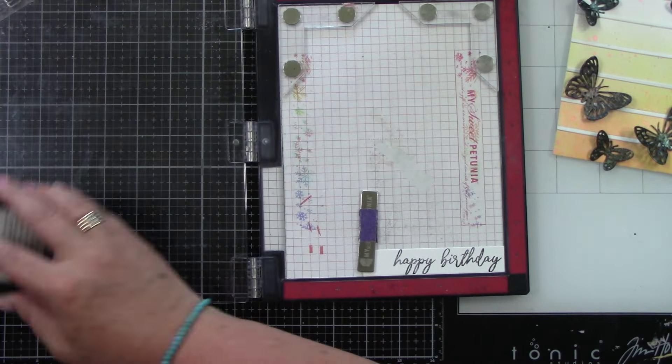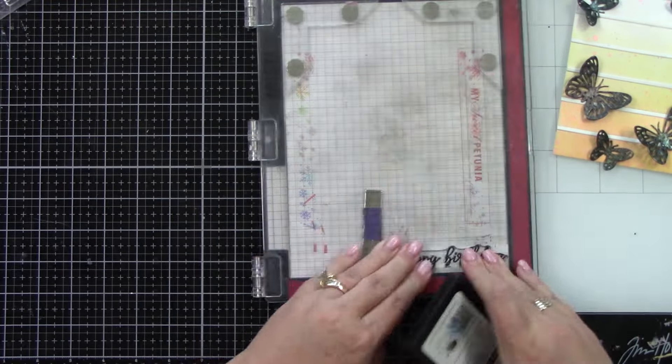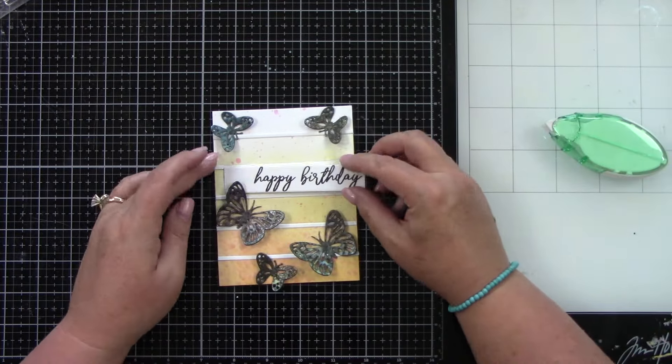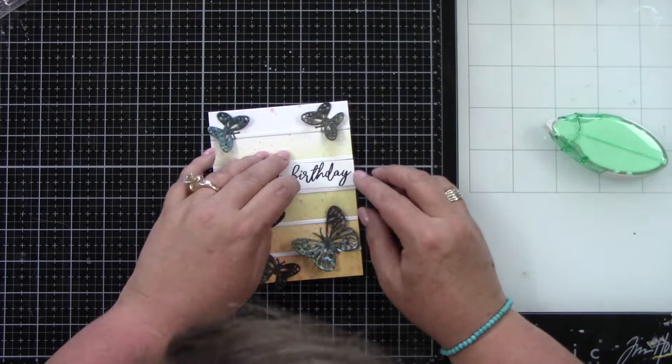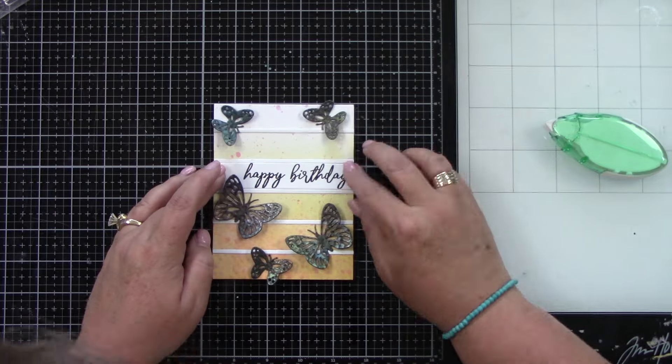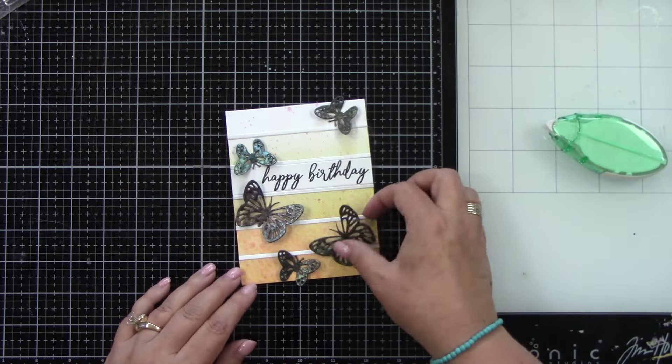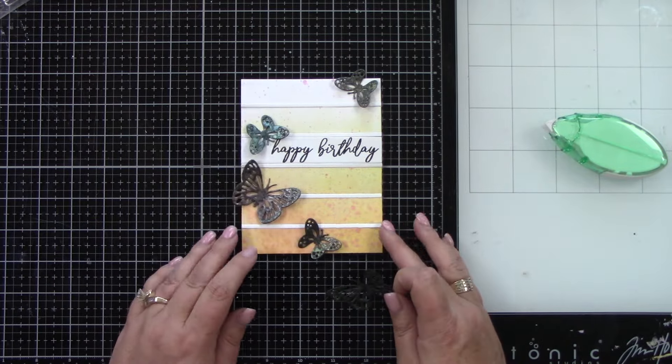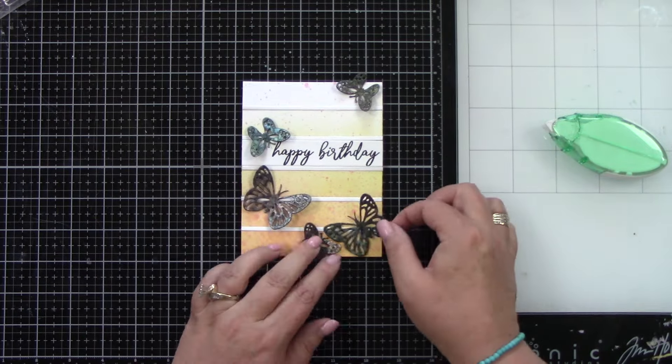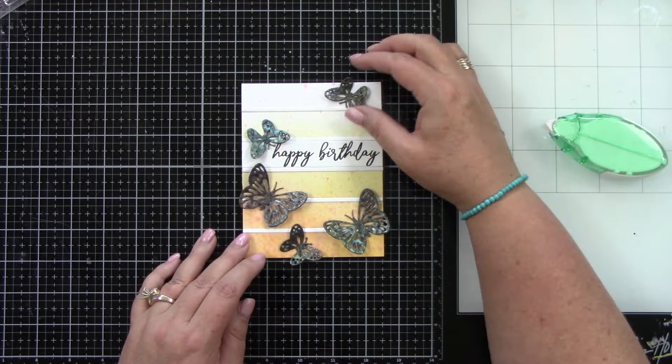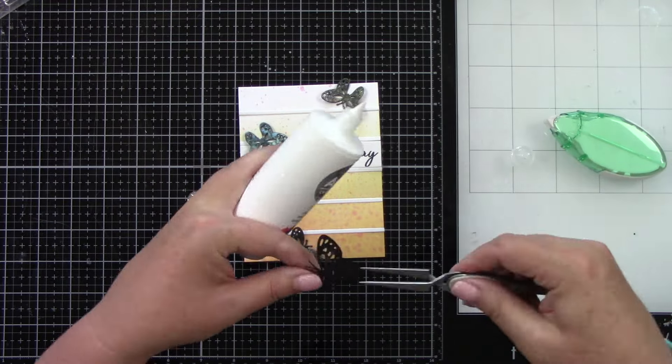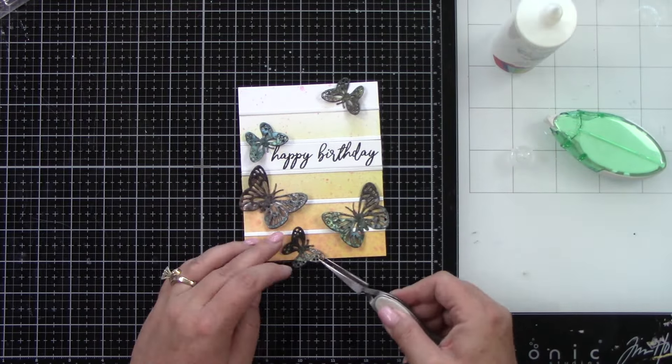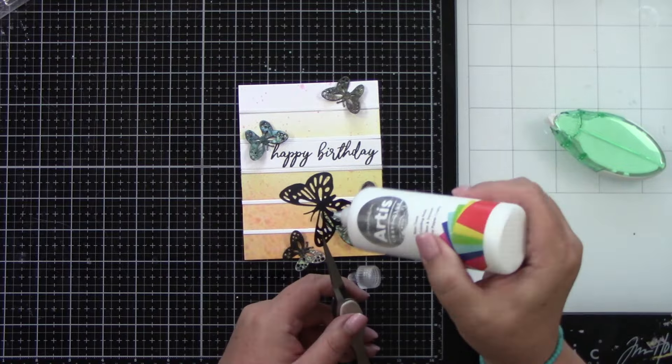I'm taking one of the bigger strips. I'm stamping happy birthday from the happy birthday stamp set with black ink. I'm going to place that here in that bottom of the upper third. I think it's perfect for a sentiment. And then I did bend the wings up of the butterflies just a little bit. We're going to adhere that with some liquid glue. And I just have these all over and I think they're so stunning.